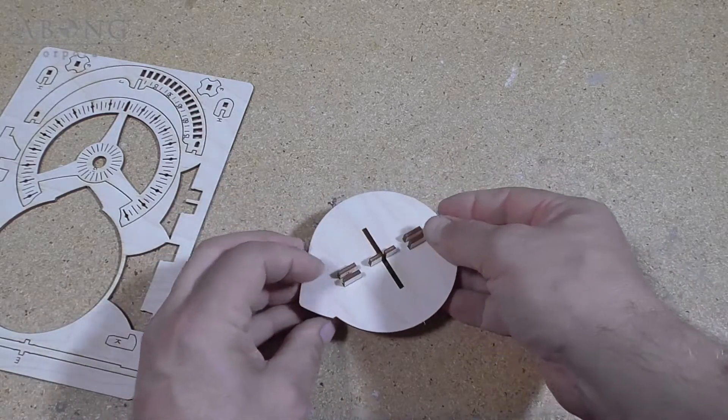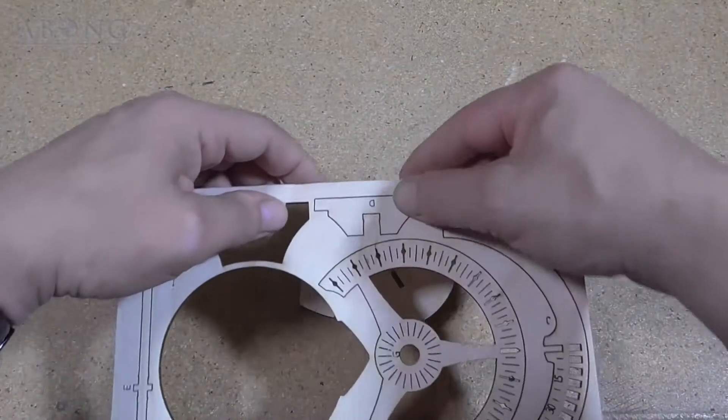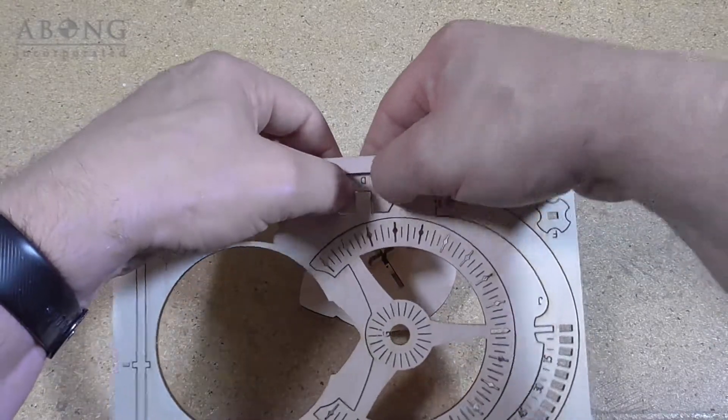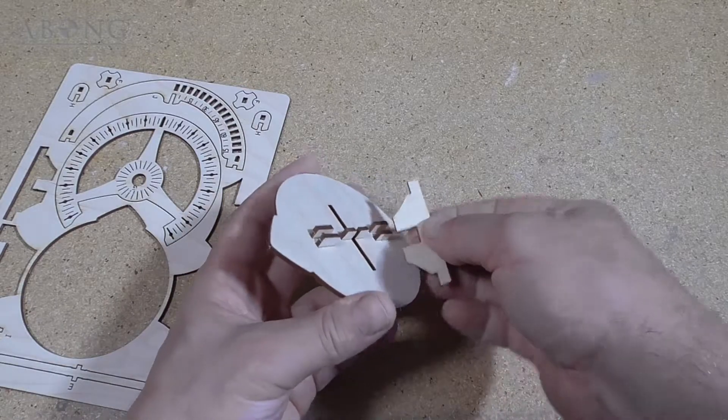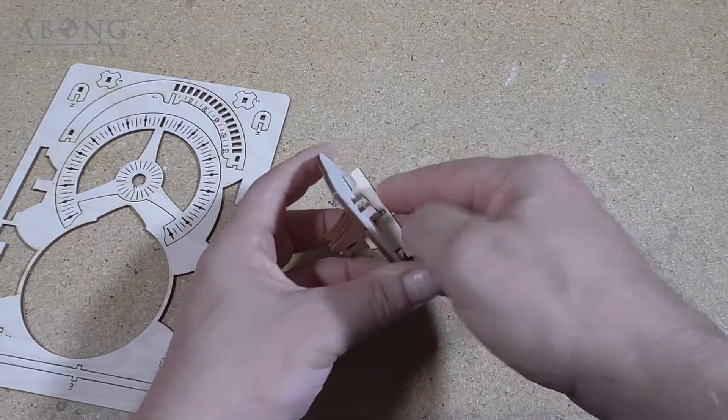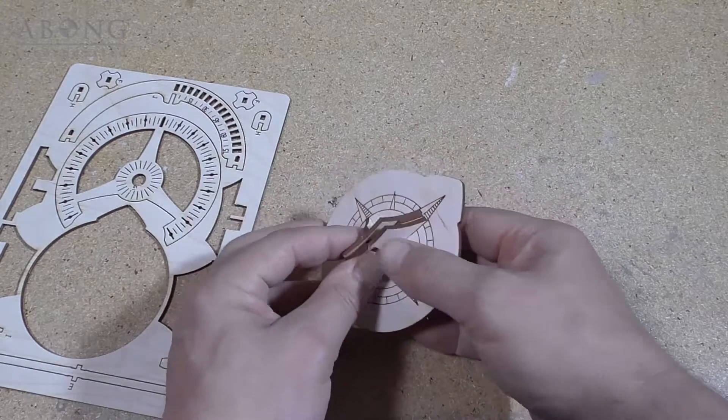Now we turn it over. We grab part D. And part D is going to go through the bottom and snap together.